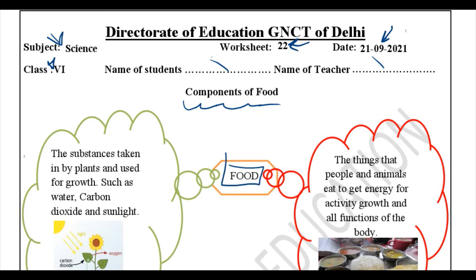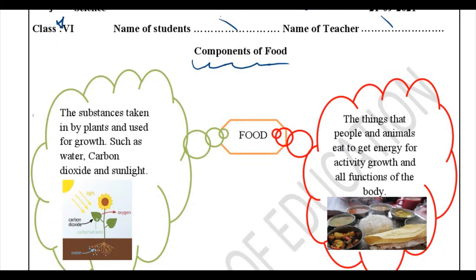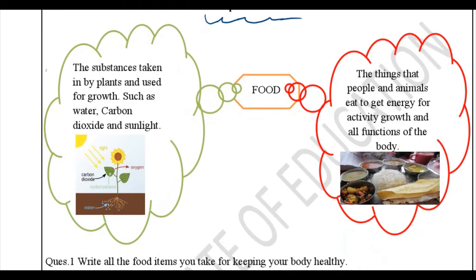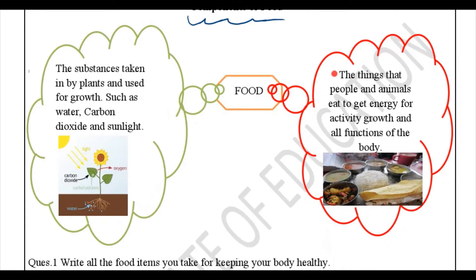First let's understand what the word 'food' actually means. There is a definition given for two things — what animals and humans eat and what plants eat. Plants eat different things than animals and human beings. Food for animals and humans refers to the things that people and animals eat to get energy for activity, growth, and all the functions of the body.